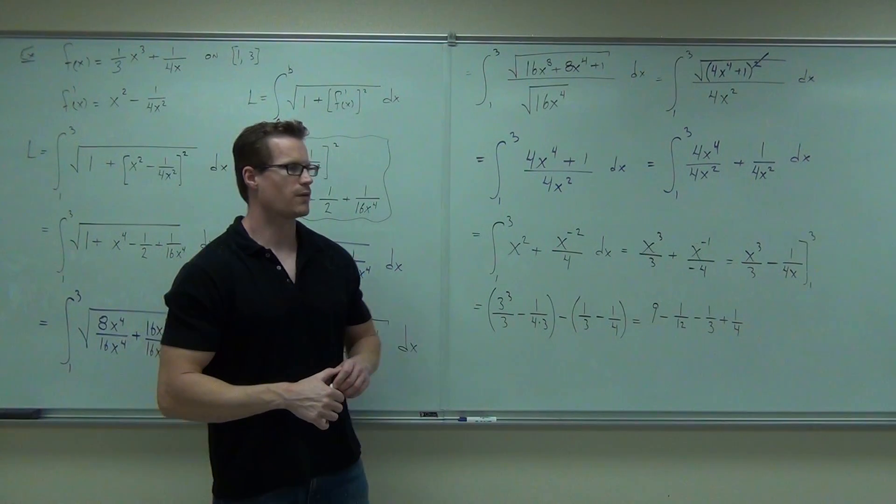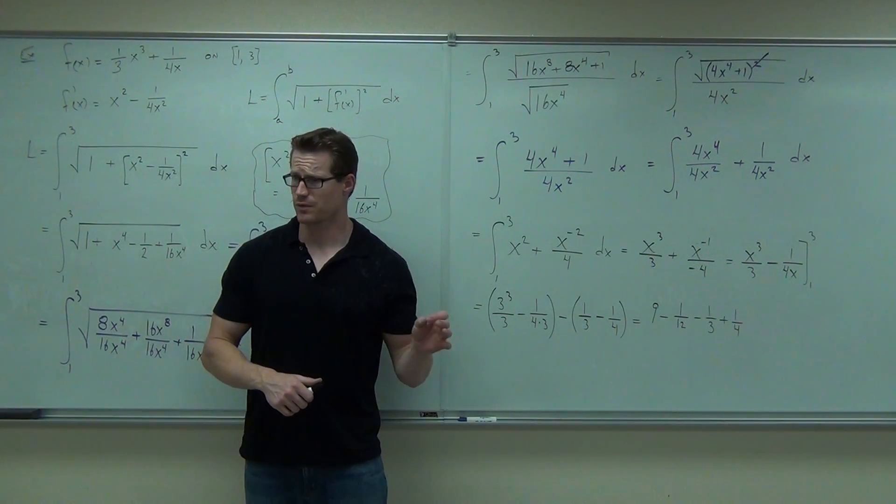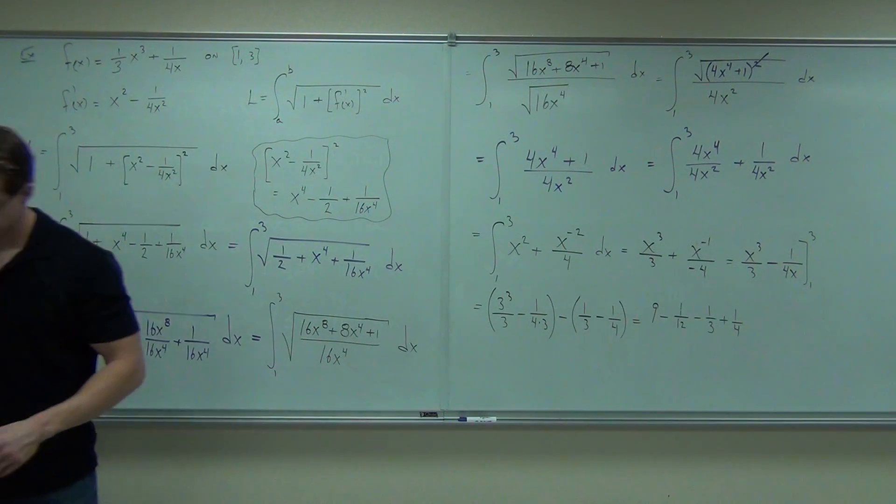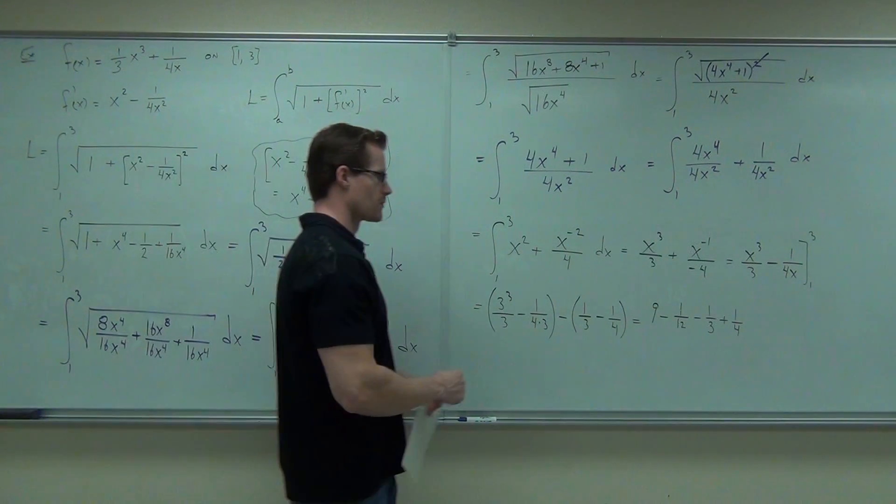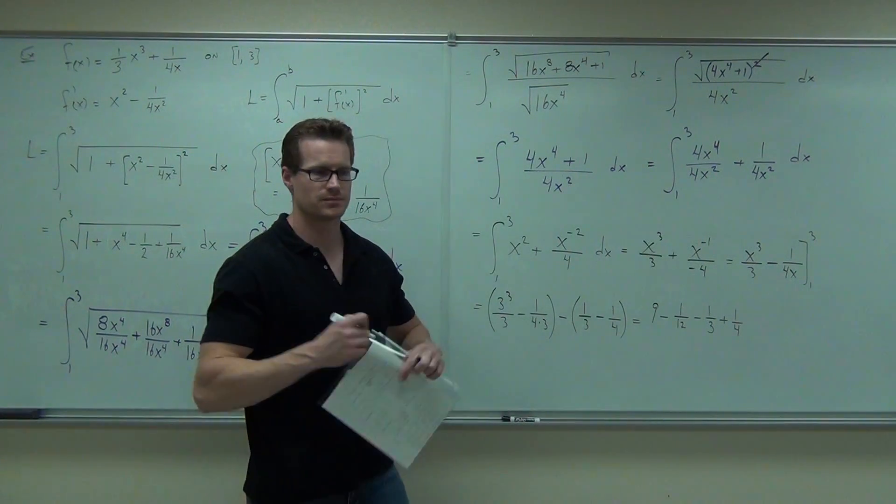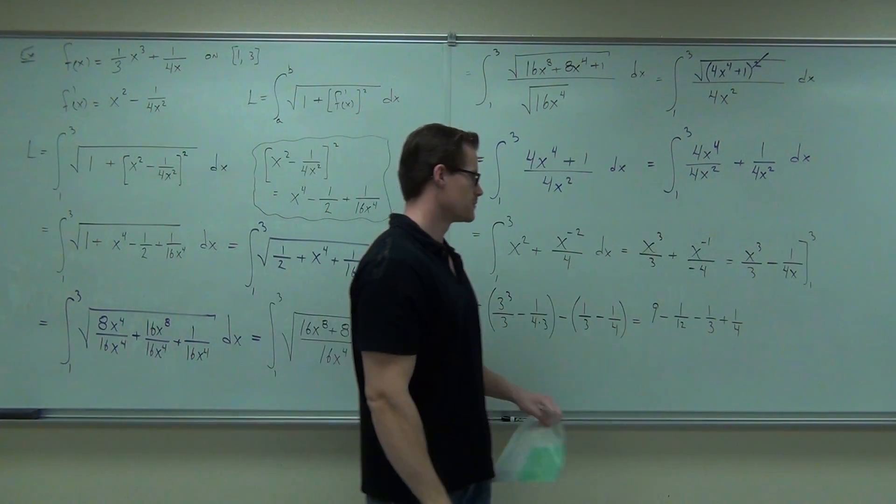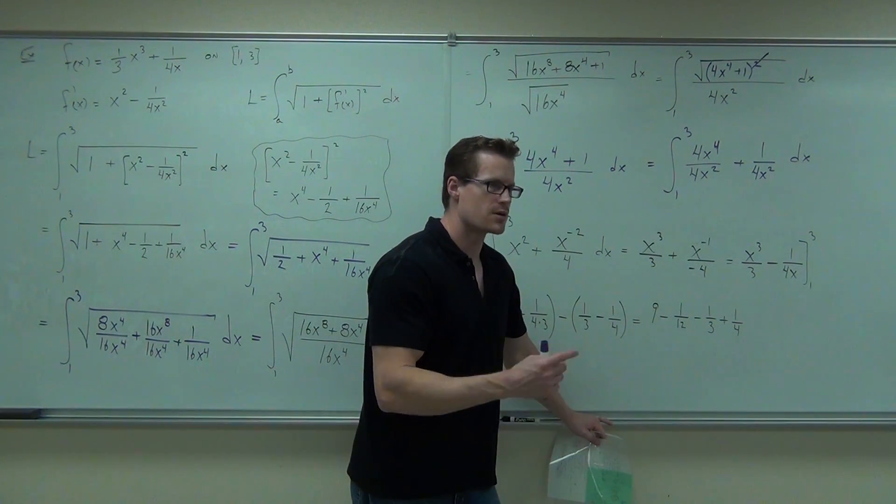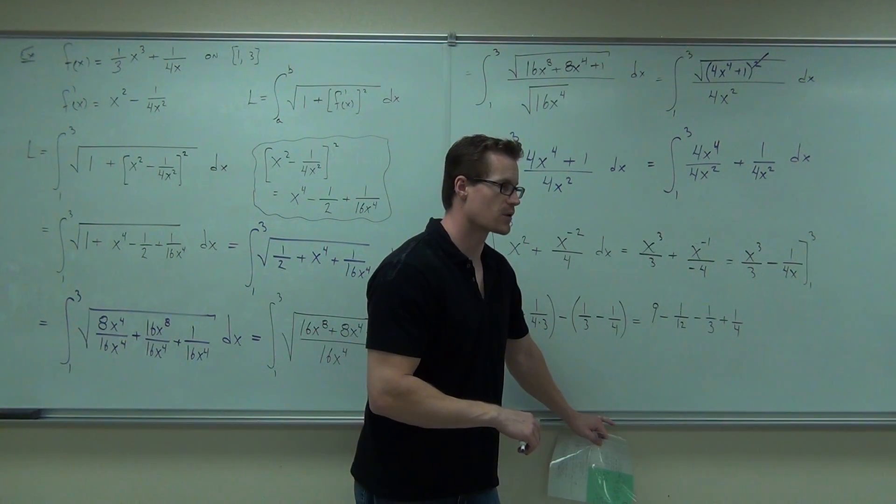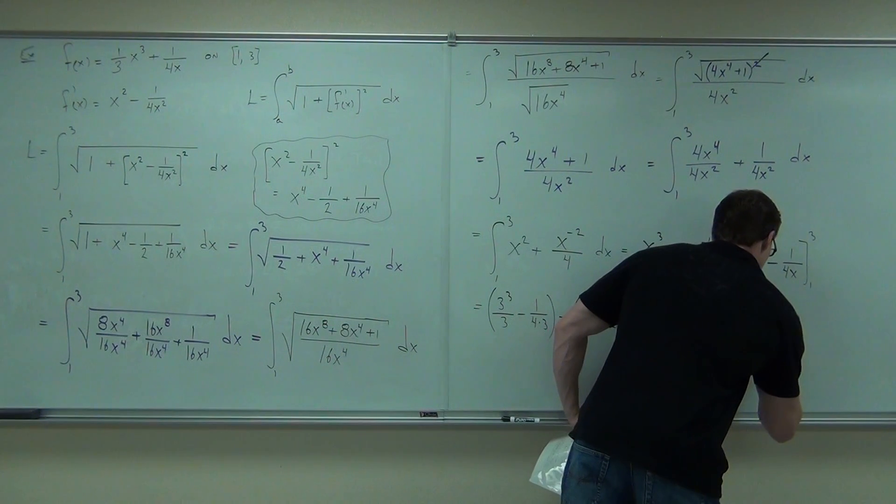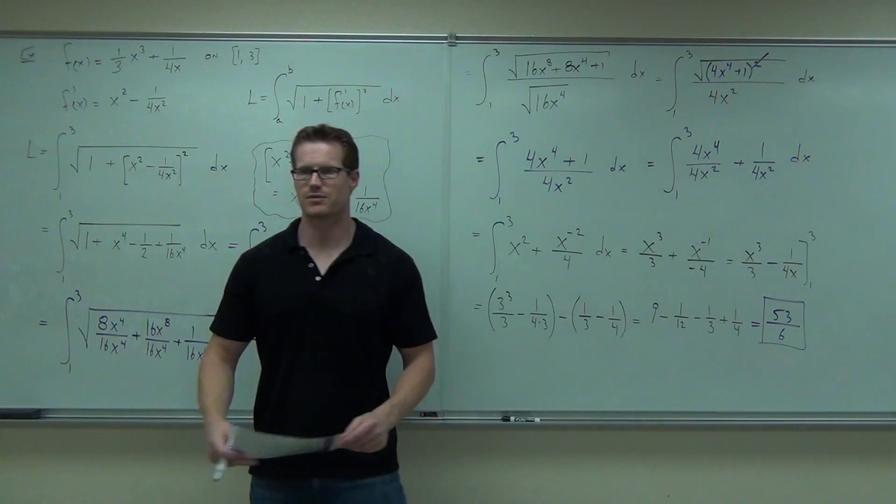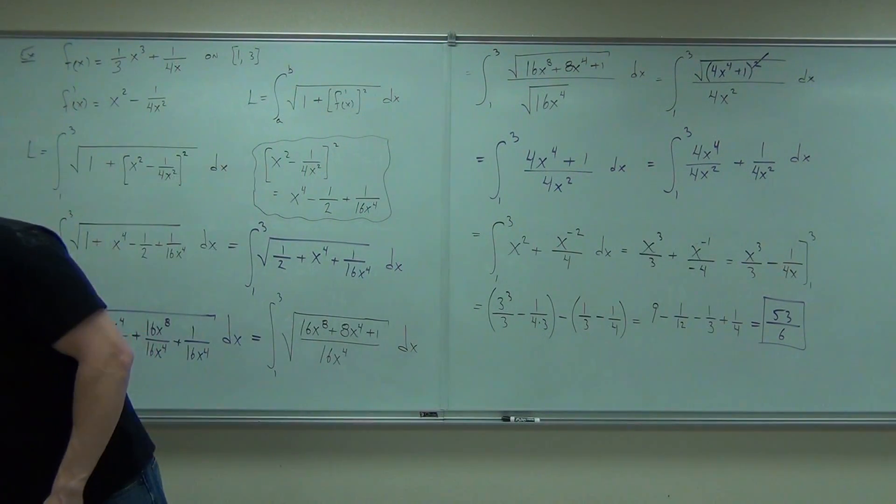If you do 9 minus 1 12th minus 1 3rd plus 1 4th. See where the plus 1 4th is coming from, first of all? Can someone do that in a calculator and see what you get? The common denominator is 12 if you want to do it that way. 108 over 12 minus 1 12th minus 4 12ths plus 3 12ths. 53 over 6? Yeah. 53 over 6. What's that? 53 over 6. The length. The length. That's crazy.